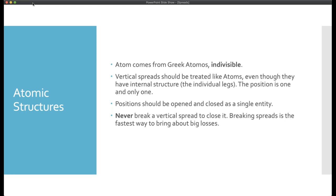Breaking a spread is the fastest way to lose lots of money. If we entered a spread for a particular reason, why would we break it? Why get rid of one leg and be left with a single long or short option? That's the wrong way to trade vertical spreads. If you're trading vertical spreads, it's because you have a thesis. If the thesis is not working, close the whole spread. Don't convert the position into something else. Once you have a vertical spread on, don't break it — close it as a single entity.